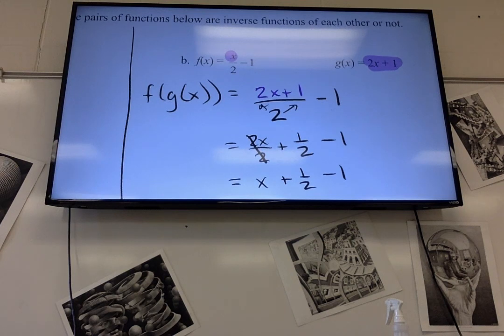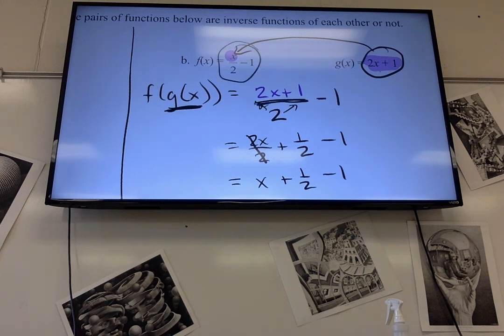So what we do, and this was old stuff, when you're doing f of g of x, which is the first step, you take g of x and you put it in place of the x. So that's why I color coded it. This purple, 2x plus 1, is just me putting that purple in place of that purple. So everything else over here, though, I wrote down. It's still divided by 2 and it's still minus 1.